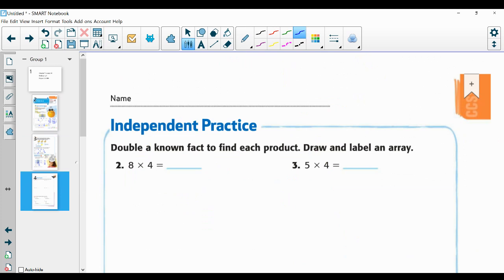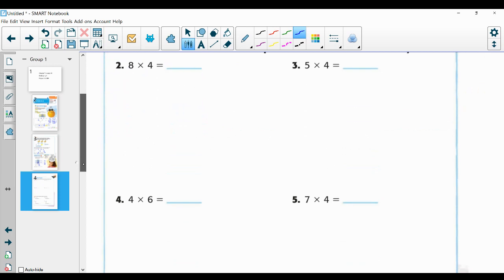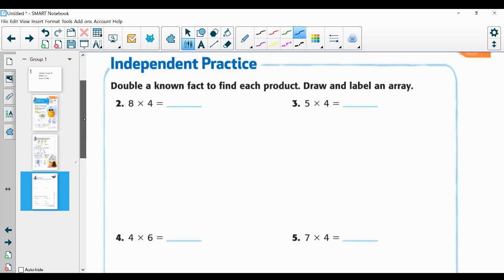Here's your independent practice. You're going to double a known fact to find each product. Draw and label an array. So you have four problems here. You're going to draw an array, decompose it into two equal parts, label the array, find the answer. You have plenty of room for your arrays. So it's really important that you draw number one and label your array and then find your answer that's part of your grade.